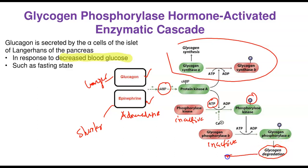As glycogen is degraded, more glucose is produced and released into the bloodstream, raising blood glucose levels. That is the pathway for glycogen phosphorylase activation.